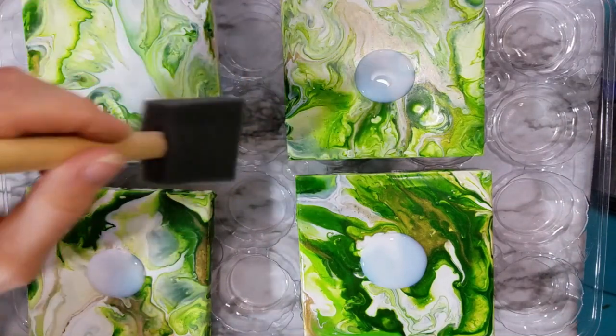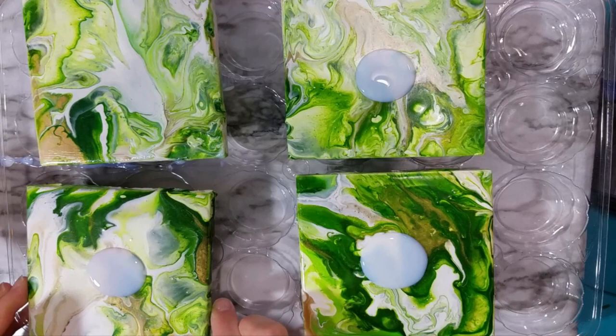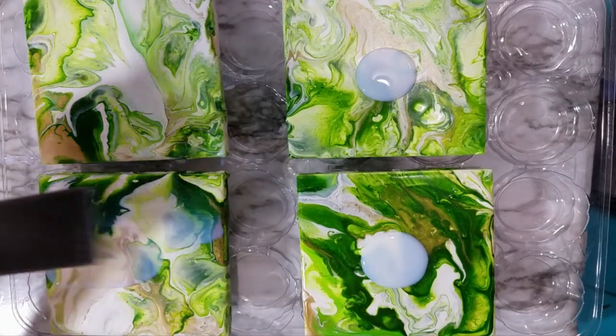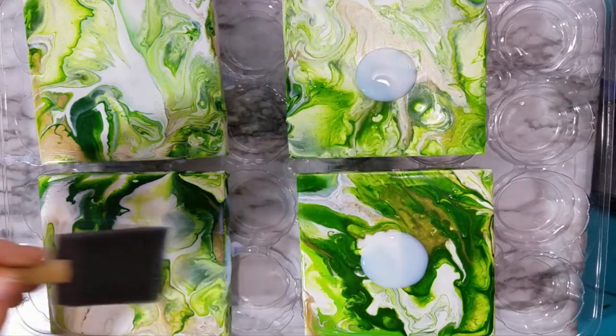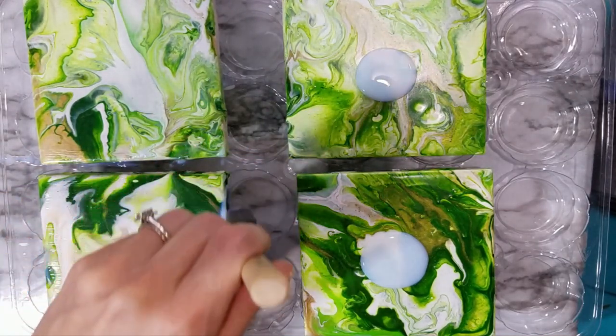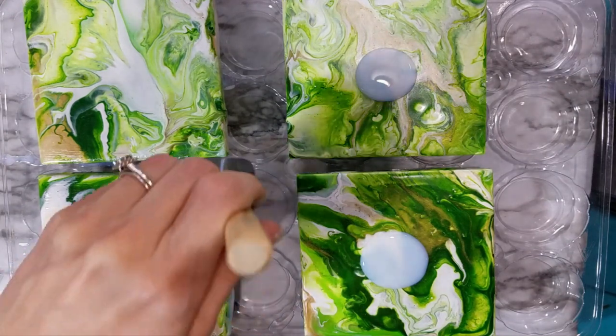And it's glossy so it'll still keep the sheen from what we have below it. Because that's one thing that I really love about acrylic pouring is the glossiness, especially on tiles because tiles are glossy to begin with.